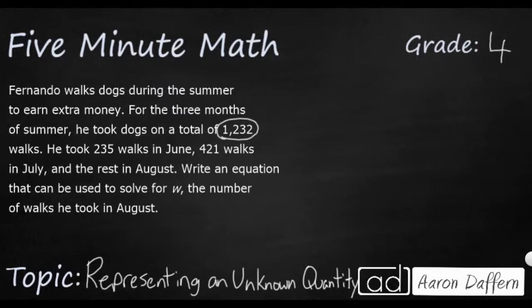So we have 235 in June, we have 421 in July, and then the rest are in August. But take a look at what it asks us to do at the very end. In fourth grade, we start looking at unknown quantities. These are called variables.